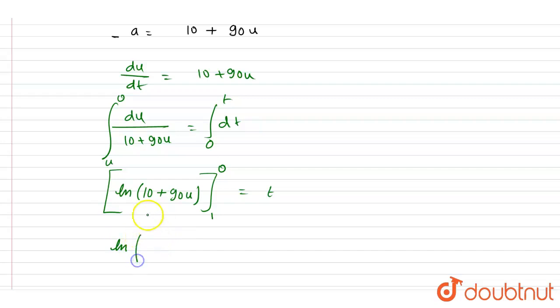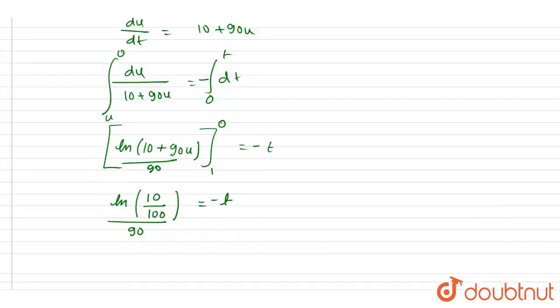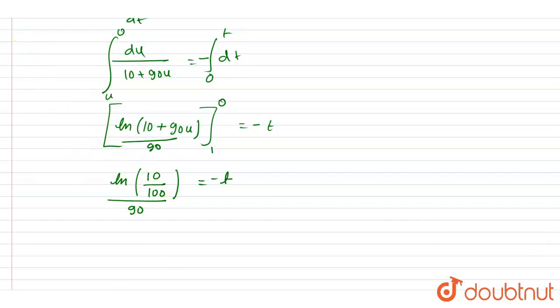At u = 0 it will be 10, at u = 1 it will be 100. And we differentiate it with respect to u, right? So here in division, 90 will be there. And since it is integration, we will put a negative sign here. Now if you see, we got the expression: ln(10)/90 equals time.